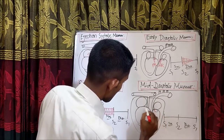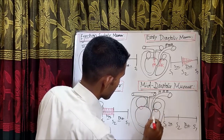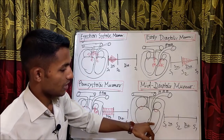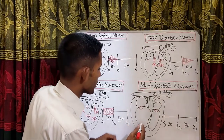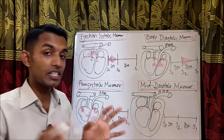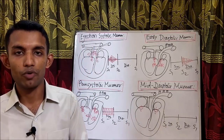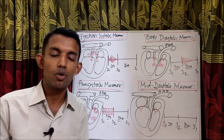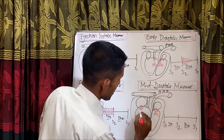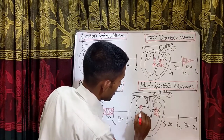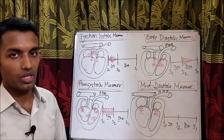This is the mitral valve and this is the tricuspid valve — through these valves, the ventricles are filled. Now due to any reason, in the middle of the filling, if it gets any obstruction, then there is a production of turbulence — that is called murmur. So in mitral stenosis and tricuspid stenosis, there is mid-diastolic murmur.